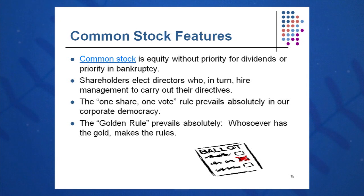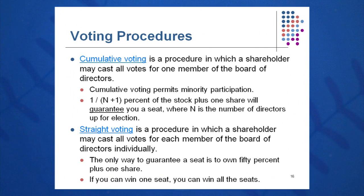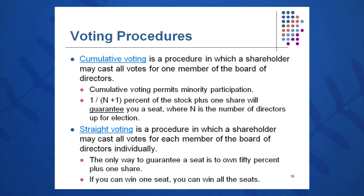The golden rule of corporate democracy says that he who has the gold makes the rule. So the more shares you have, the more voting influence you have. Two types of voting are: straight voting, where one share equals one vote and you cast all your votes for one member of the board of directors one at a time — that's called straight voting.